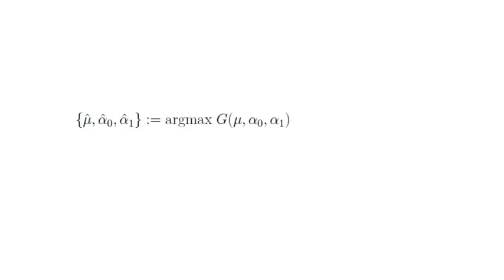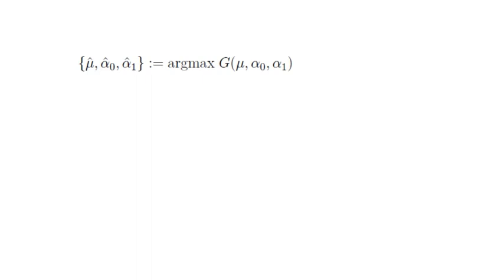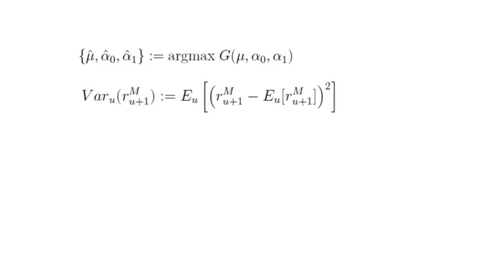So now that we have found the maximum likelihood parameters, you find the forecast of next month's return variance by plugging in the parameters into the ARCH(1) dynamic. So conceptually, you write down the equation for variance, which is the conditional variance as of time U for the return in U+1, is defined as the conditional expectation as of time U of the squared spread between the realized return in U+1 minus its conditional forecast.